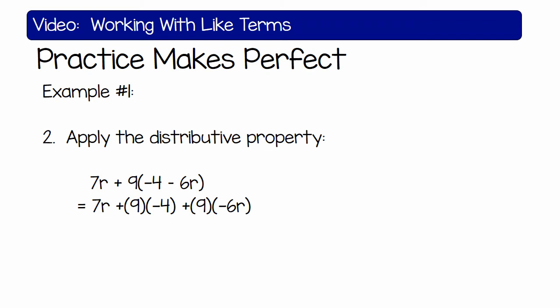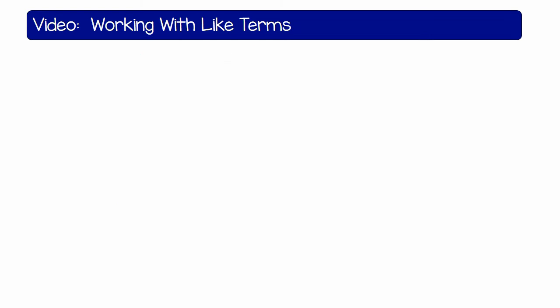7r plus 9 times negative 4 plus 9 times negative 6r would give 7r minus 36 minus 54r.